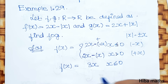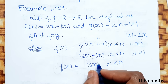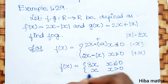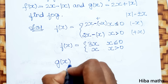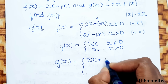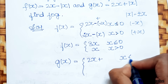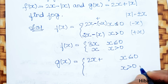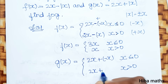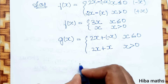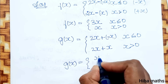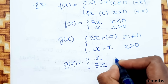So when x is equal to 0, 2x minus x is equal to x. And 2x plus modulus of x is equal to x. So: 2x minus x gives x, and 2x plus x gives 3x, for x less than or equal to 0 and x greater than 0 respectively.